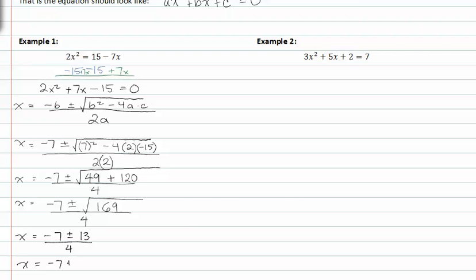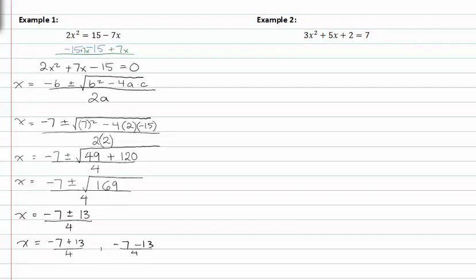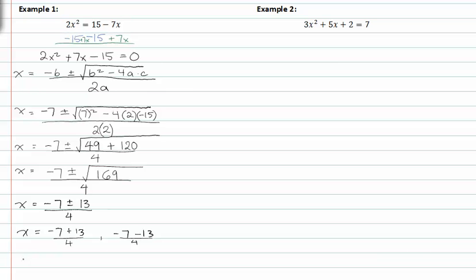This gives me x is equal to negative seven plus thirteen over four. And the other option which is negative seven minus thirteen over four. So my two solutions for x are x is equal to three halves, and the alternate x which is negative five.